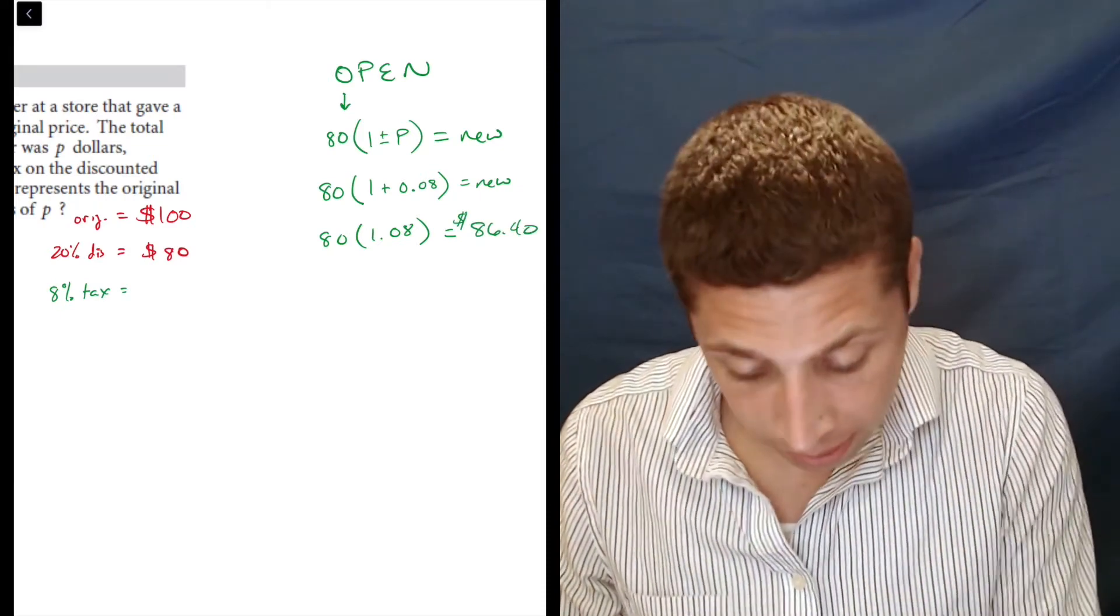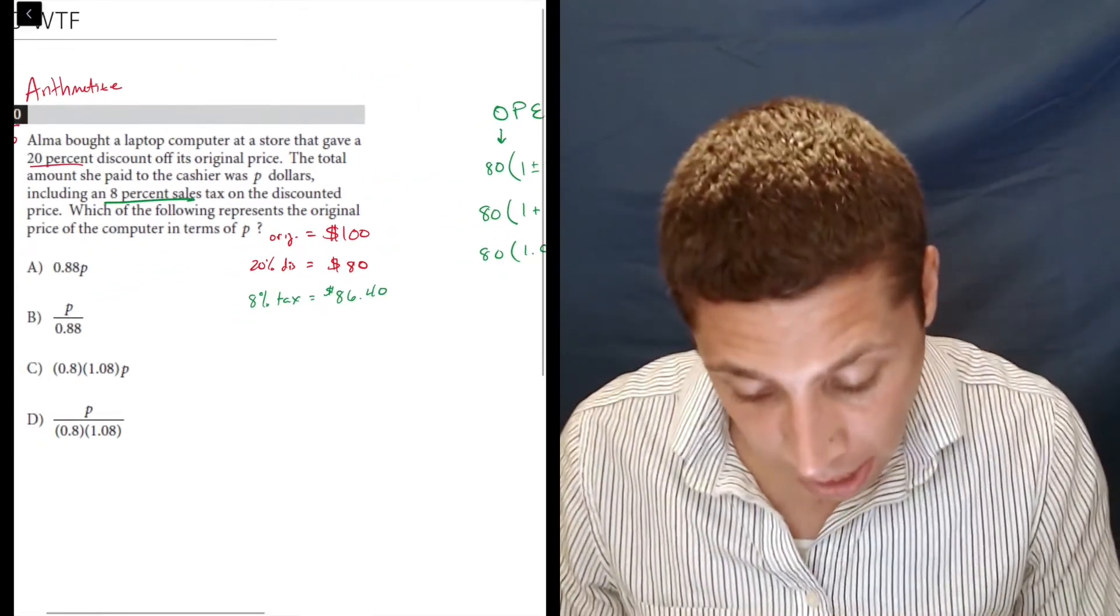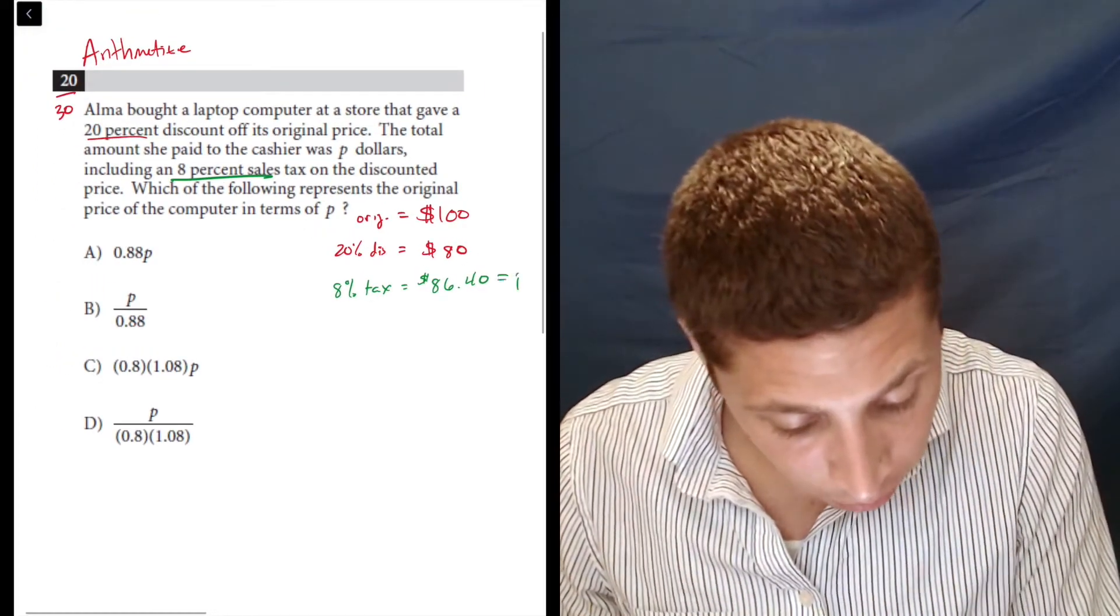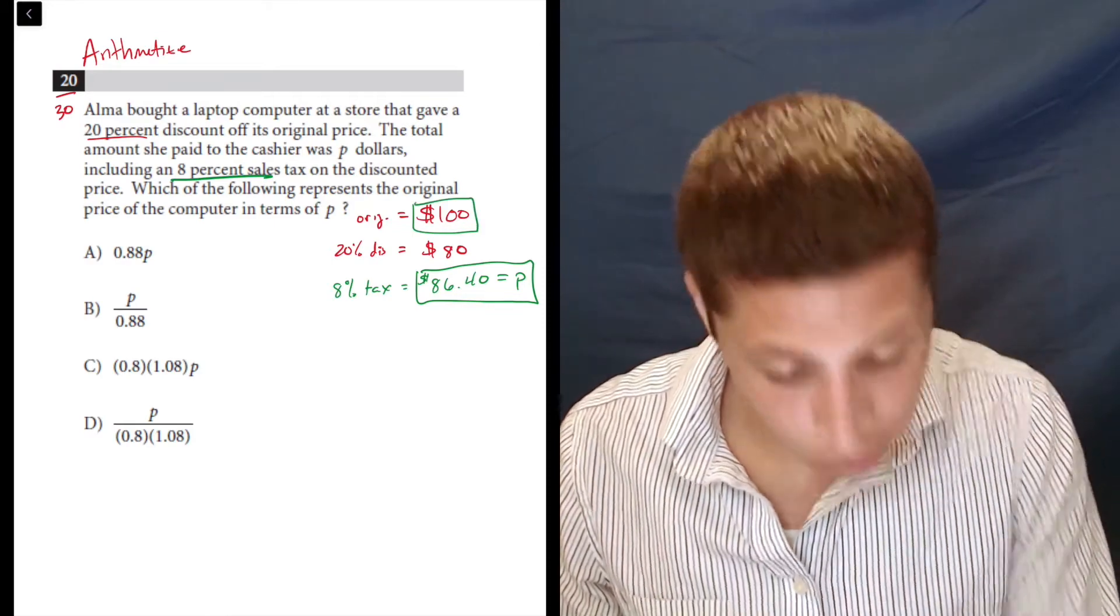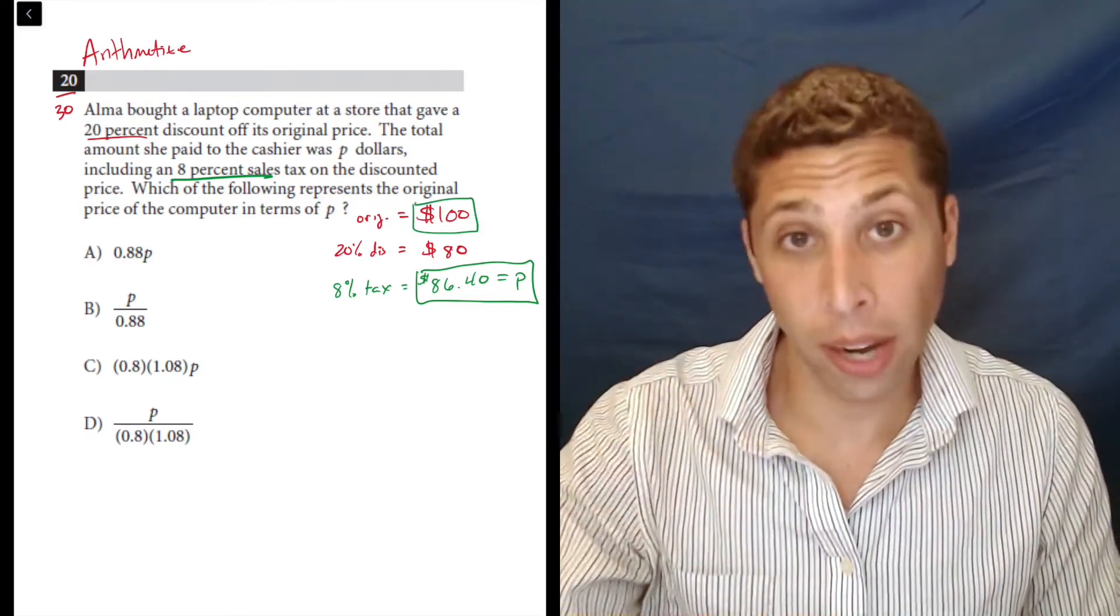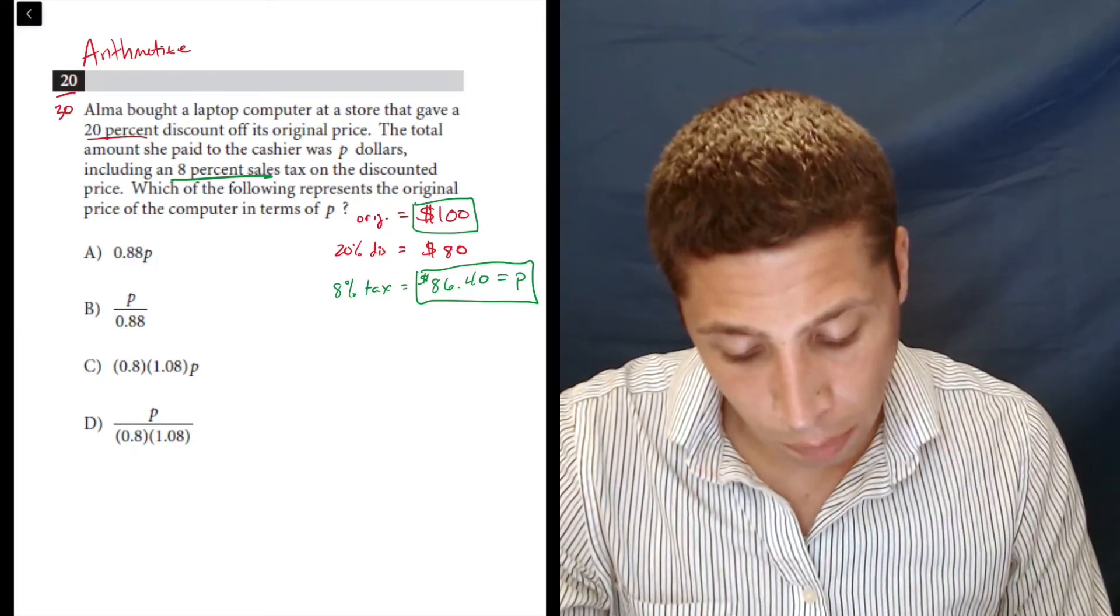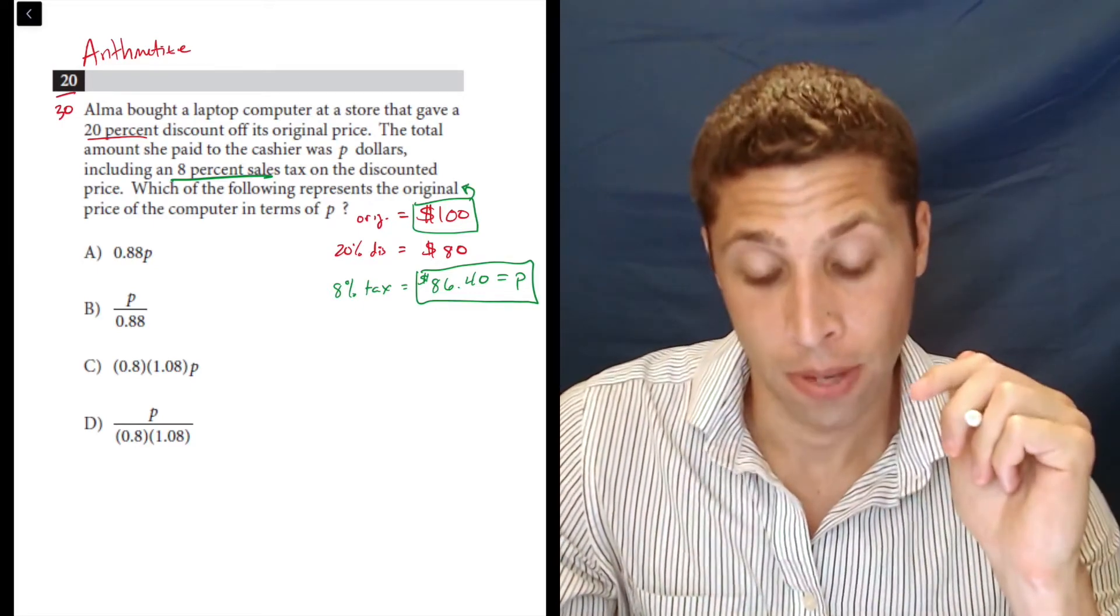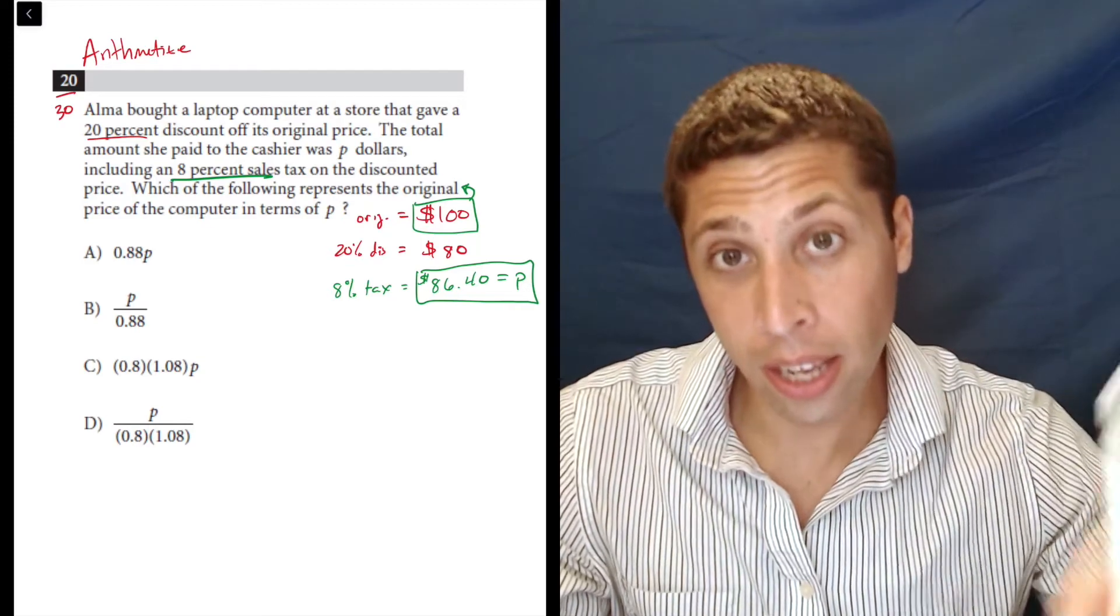So after the tax, that's 86.40. And so that's what she's paying. So that's also the value of p. So there are two numbers floating around that I really care about. There is the original price and the price that she pays. So what do the answers represent? They represent the original. So when I plug 86.40 in for p, I need to get 100.